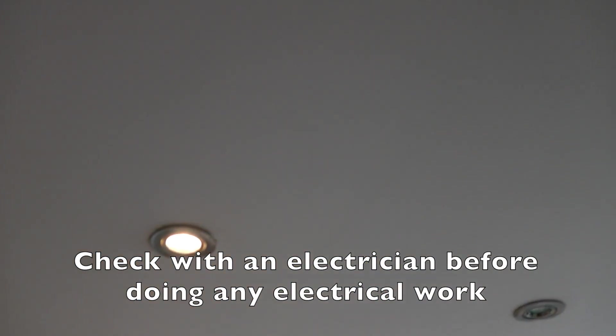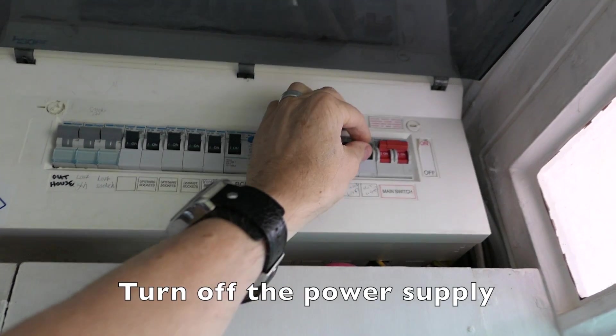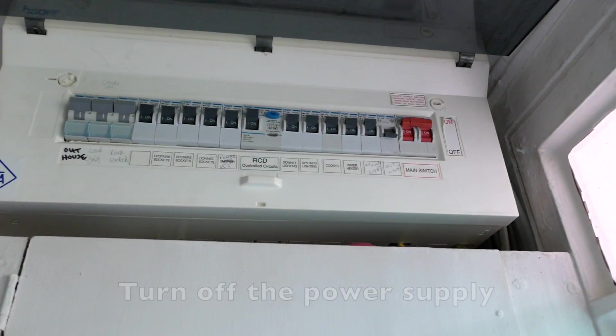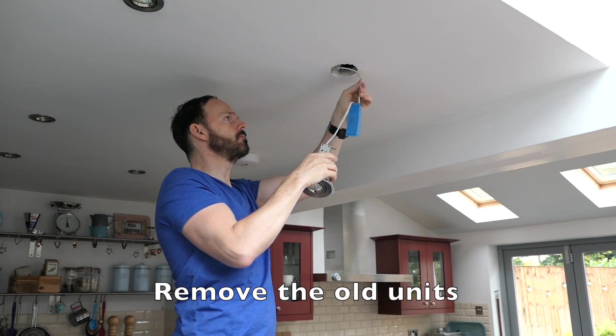Before doing any electrical work, check with a qualified electrician. Turn off the power to the lights on the distribution board. Then you are ready to take out the lights from the ceiling.